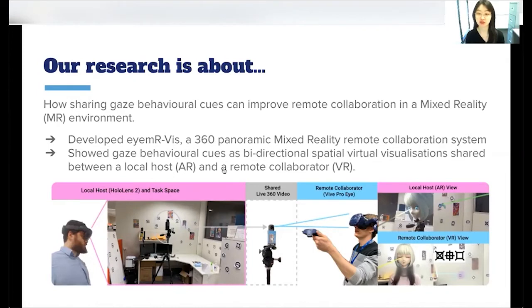To do this, we developed MRVIS, a 360 panoramic mixed reality remote collaboration system that shows gaze behavior cues as bidirectional spatial virtual visualizations shared between a local host in AR and a remote collaborator in VR.